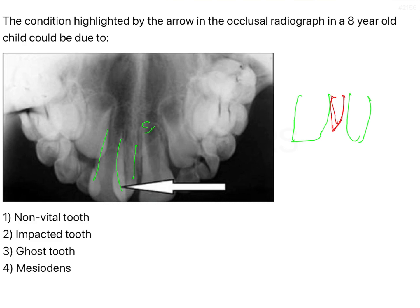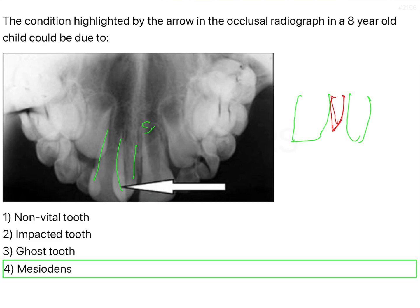Such a characteristic appearance is going to always indicate towards only one type of anomaly, and that is what is called the mesiodens. The mesiodens is nothing but a supernumerary tooth which is conical in shape. Supernumerary teeth can be broadly classified based on morphology and based on their location. A mesiodens is named based on its location, whereas based on its morphology, it is conical in shape.